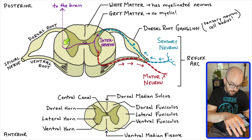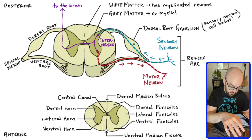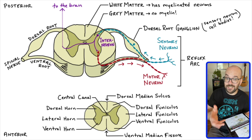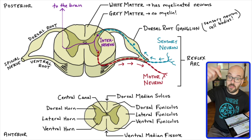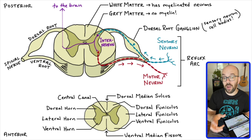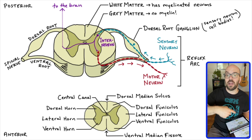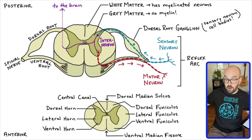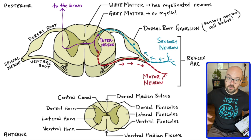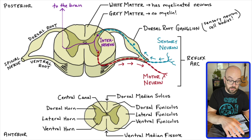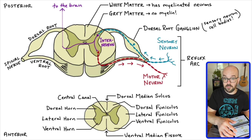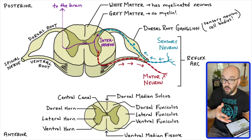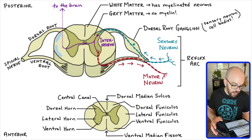So what is all of this white matter in the three funiculi? Those are going to be where the ascending — going up — and descending — going down — tracks of the spinal cord are. Signals have to travel from the brain down through the spinal cord and out. Signals also have to travel from our body parts, like when we touch something, to the spinal cord and back up through ascending tracks. We're not going to name all of the ascending and descending tracks, but I want to show roughly where they are.